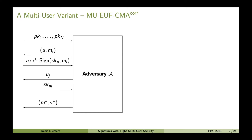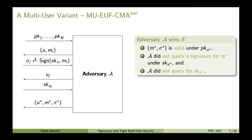If the adversary queries for a user identifier uj, it will get the secret key skuj in response. In the end, similar to signing queries, the adversary needs to tell for which user this forgery attempt should be valid. We say the adversary A wins if (m*, σ*) is valid under pku*, if A did not query a signature for m* under secret key u*, and A did not query for sku*.